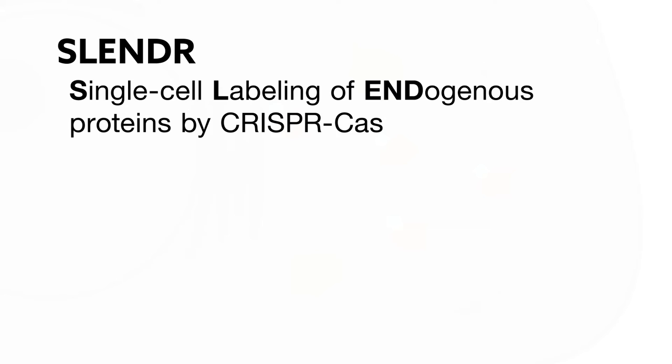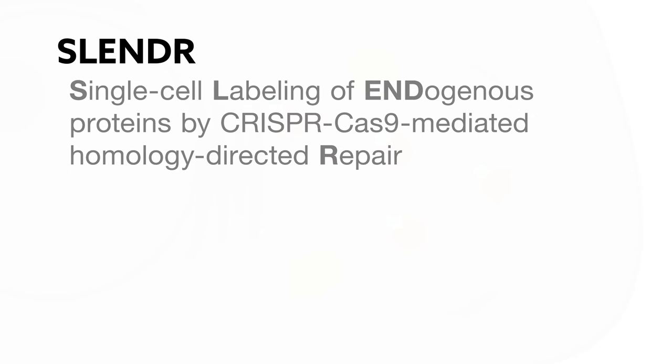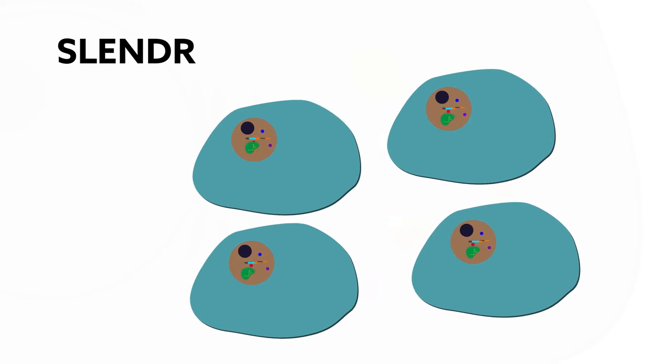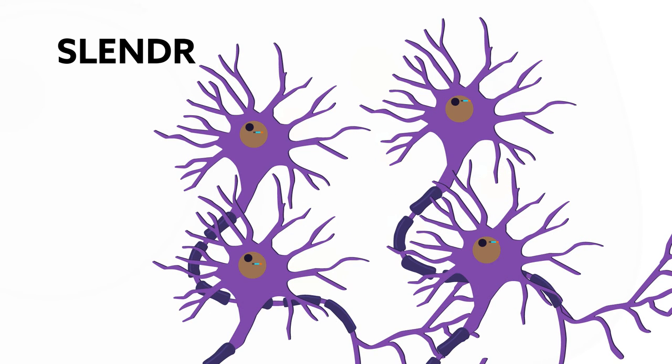SLENDER, which is short for single-cell labeling of endogenous proteins by CRISPR-Cas9-mediated homology-directed repair, overcomes these limitations by applying CRISPR-Cas9 to the immature, dividing cells that generate the mature cells of interest, instead of targeting the mature cells directly.